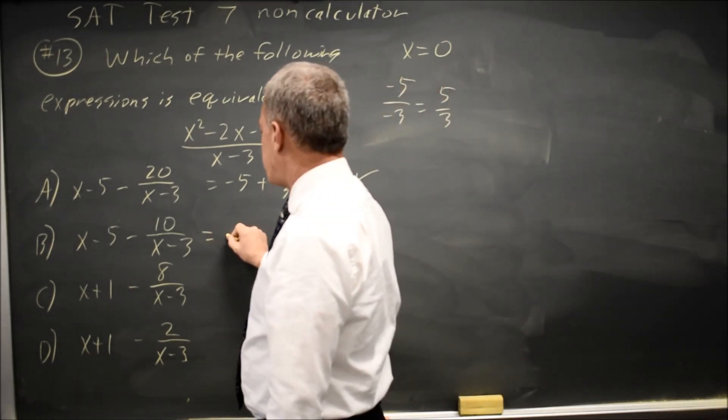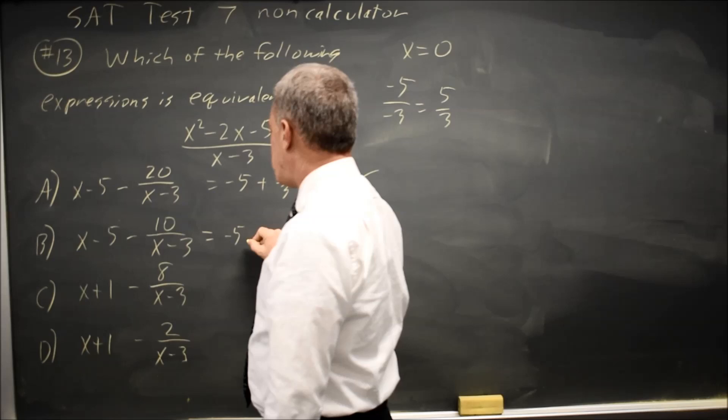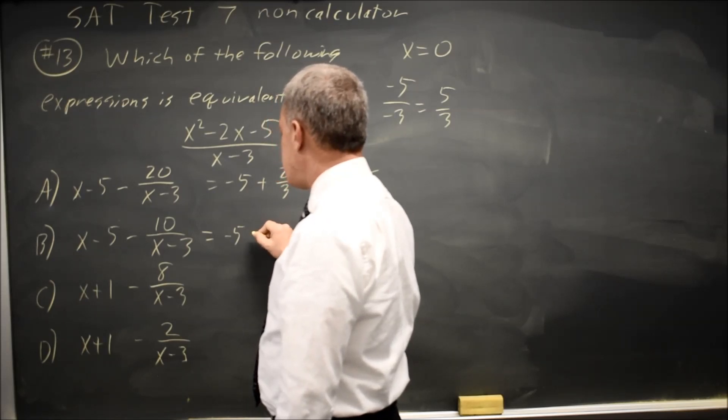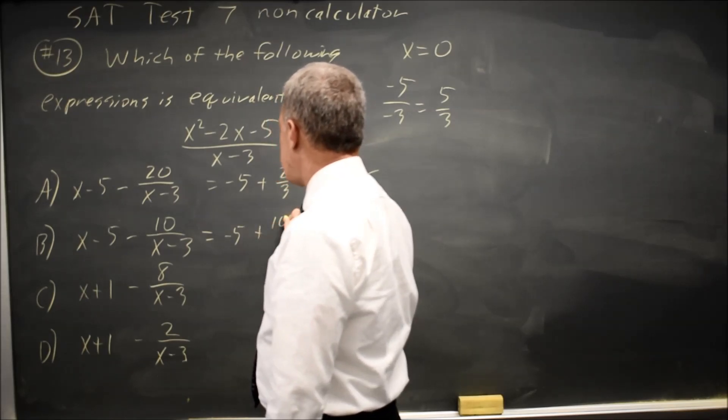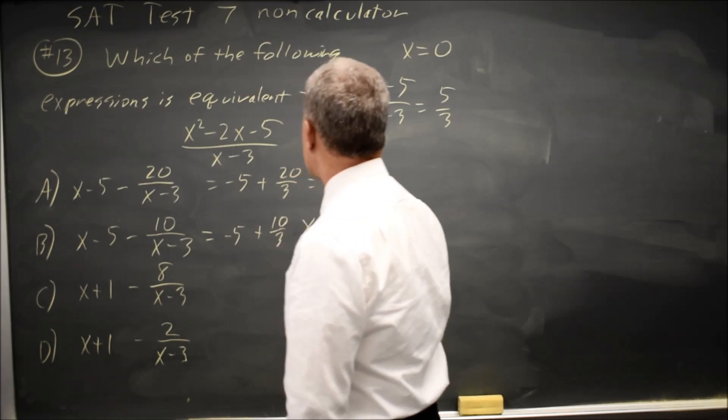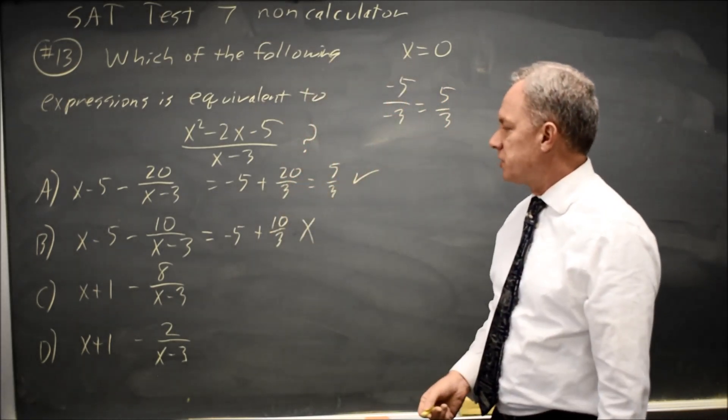This one is 0 minus 5 is negative 5 minus negative 10 over 3 is plus 10 over 3. And we know that doesn't work because negative 5 plus 20 over 3 did work.